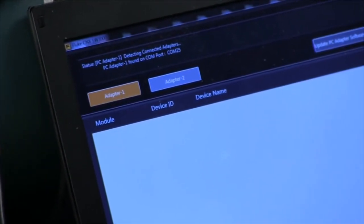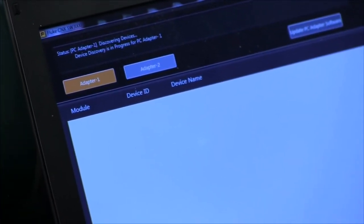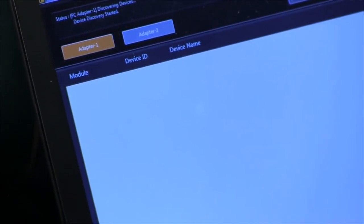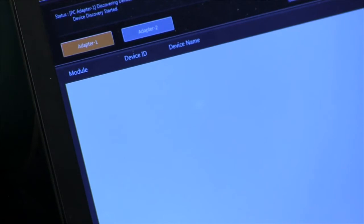Once your software initializes, you simply go to discover devices. The PC will identify that the USB adapter is installed and will start to look for any modules that are within either a 20 meter or a little more than 60 feet range.